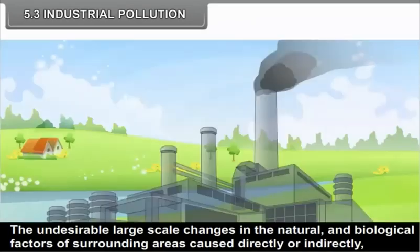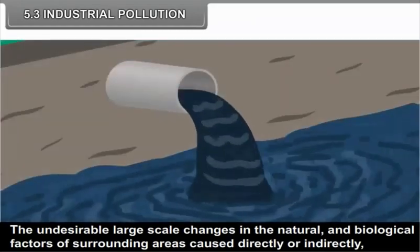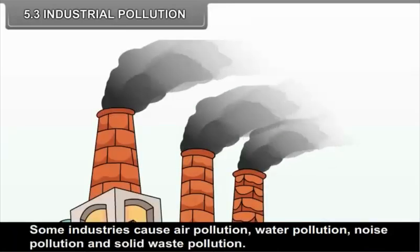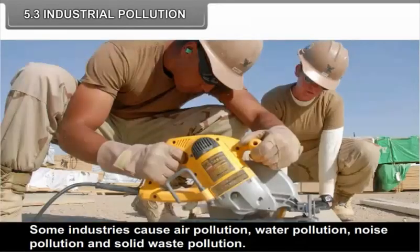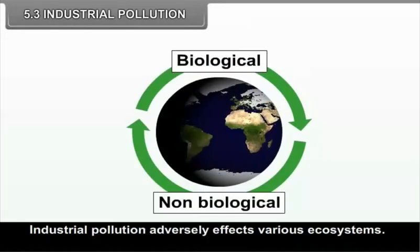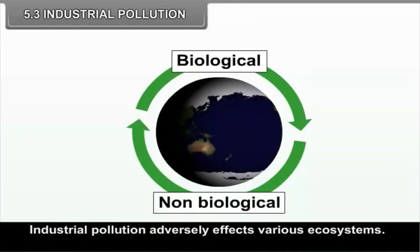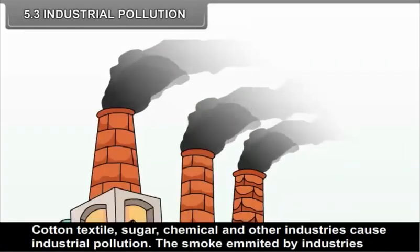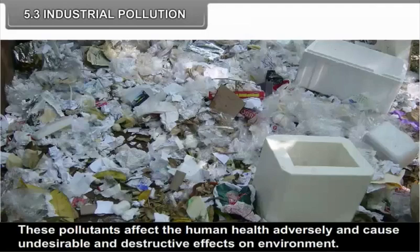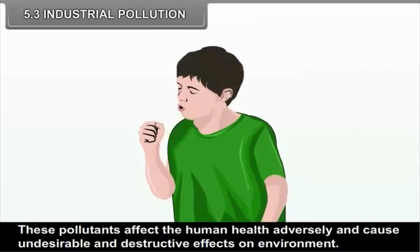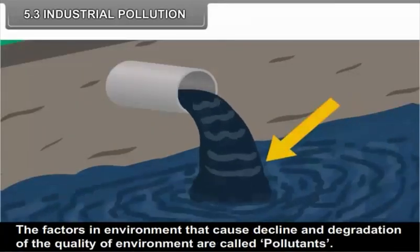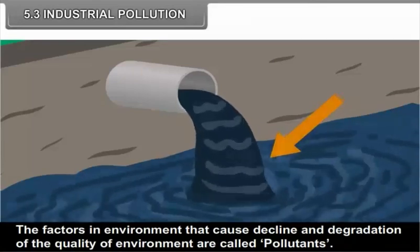Industrial Pollution: The undesirable large scale changes in the natural and biological factors of the surrounding areas caused directly or indirectly by various industries is called industrial pollution. Some industries cause air pollution, water pollution, noise pollution and solid waste pollution. Industrial pollution adversely affects various ecosystems. Cotton textile, sugar, chemical and other industries cause industrial pollution. The smoke emitted by industries, water and solid waste contain pollutants. These pollutants affect human health adversely and cause undesirable and destructive effects on the environment. The factors in the environment that cause decline and degradation of the quality of environment are called pollutants.